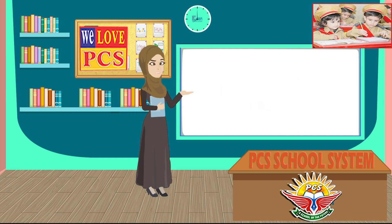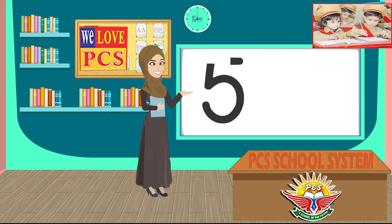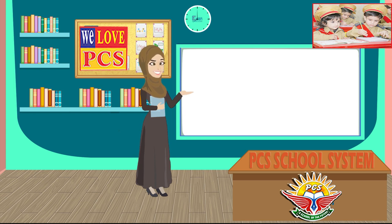How do we write the number five? Go down, around, and a flag up high — that's the way to make a five!